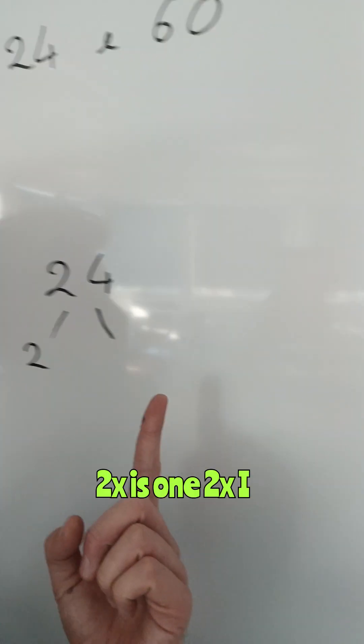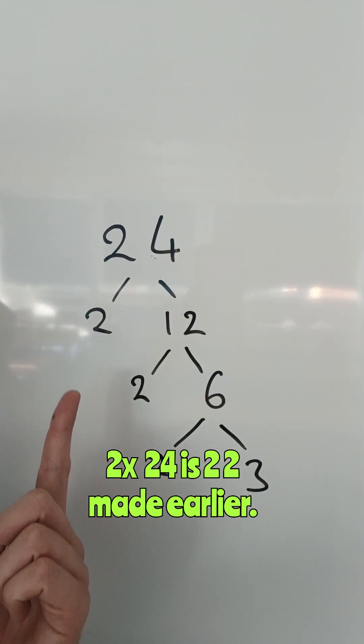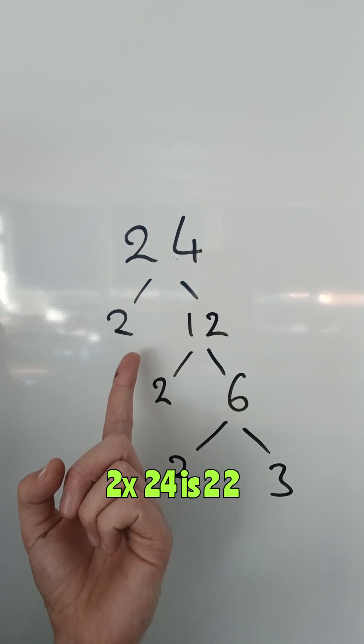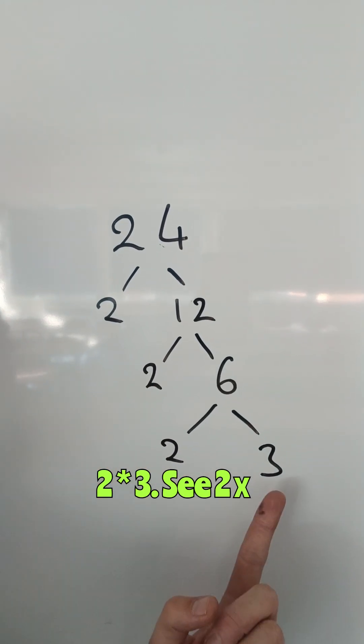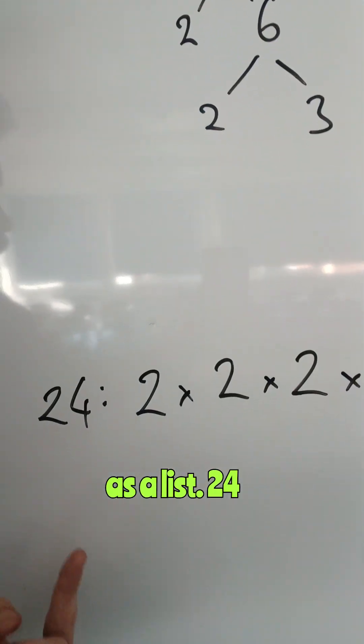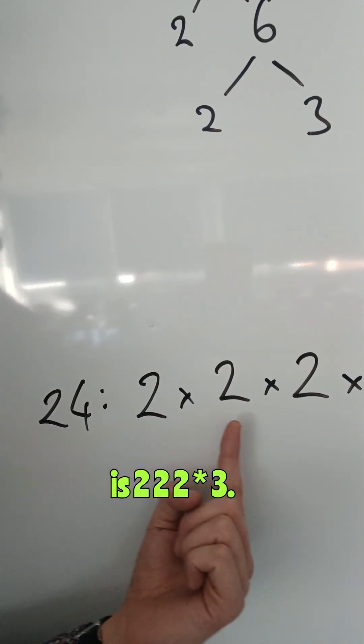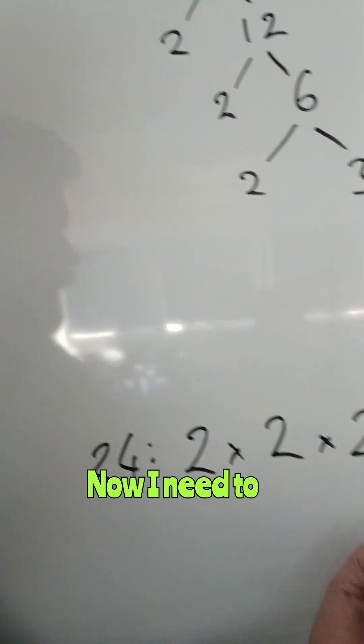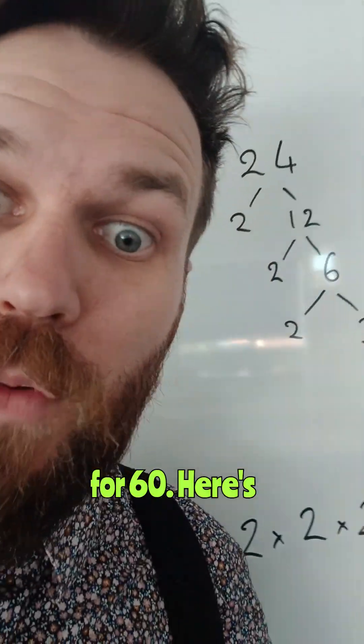Here's one I made earlier. 24 is 2 times 2 times 2 times 3. See how I broke it down there? And I wrote it out as a list.